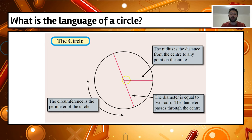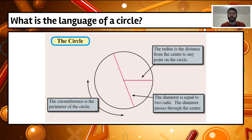If you look at the diameter, it's actually two lots of the radius — two radii. So if we need to calculate the radius from the diameter, it's simply half the diameter. Around the circle, where we have the perimeter, we use the term circumference. That's the mathematical term for the perimeter of a circle.